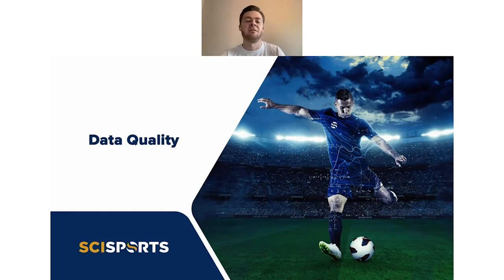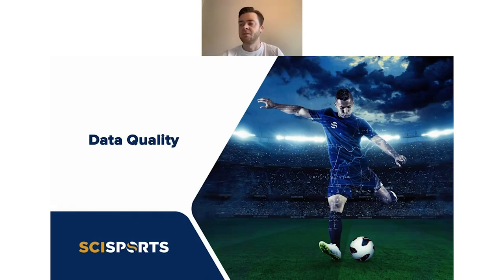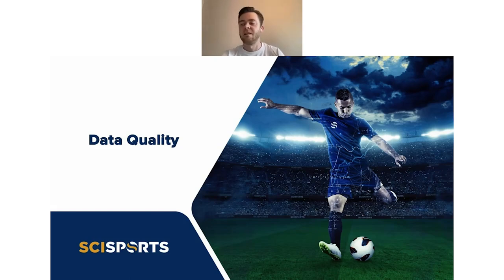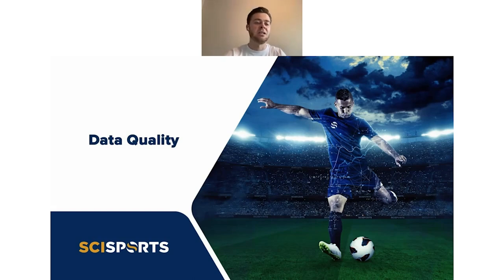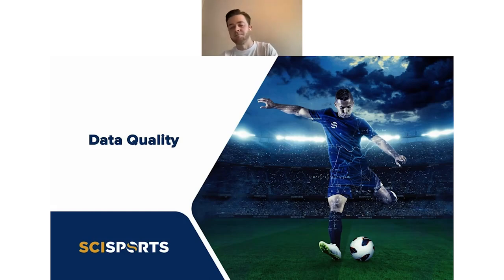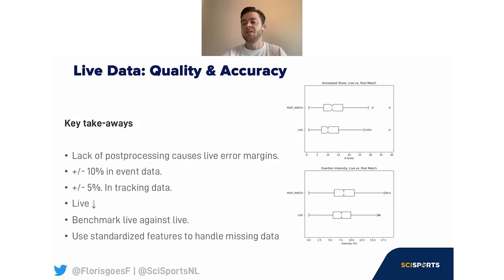Now that has given you some insight into what a real-time application looks like, but what about live data quality? Data quality is important because both event and tracking data streams normally go through post-processing routines before being made available to the user, which is obviously impossible in a real-time situation. Post-processing involves things like imputing missing data, correcting faulty annotations, and other manual quality improvements. When these are not an option, how does it affect data quality? To answer this, we compared real-time and post-match analysis over 200 matches.